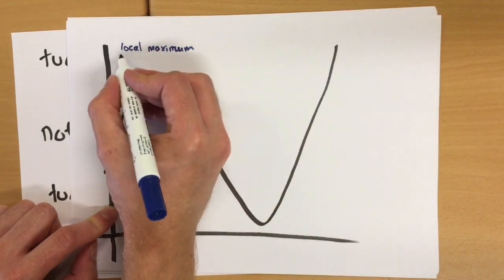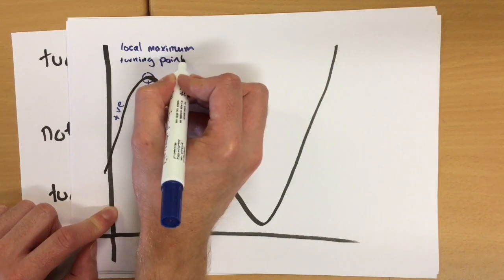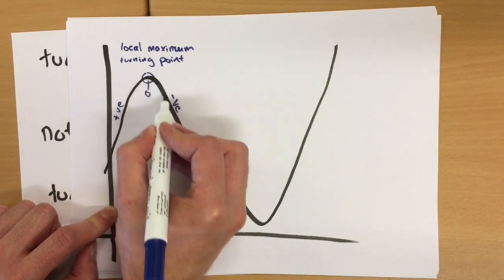And it's local maximum, also the turning point of the graph, because it turns from positive into negative.